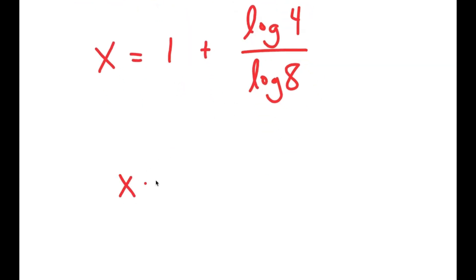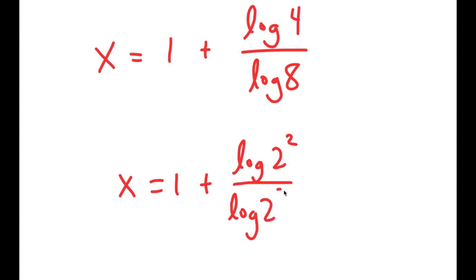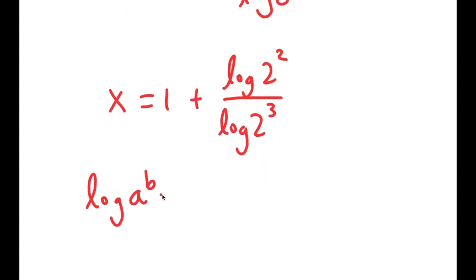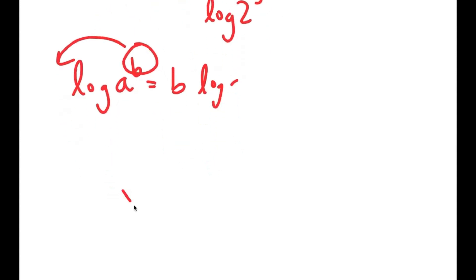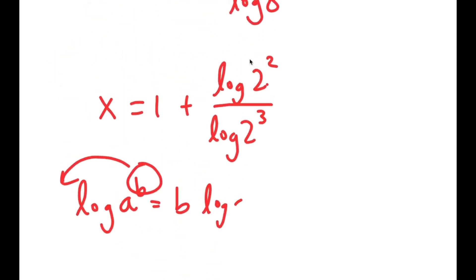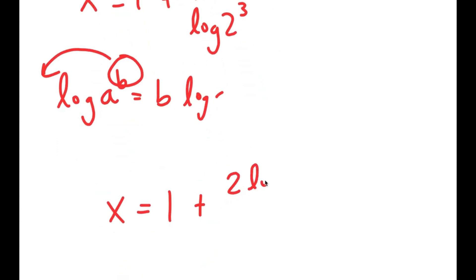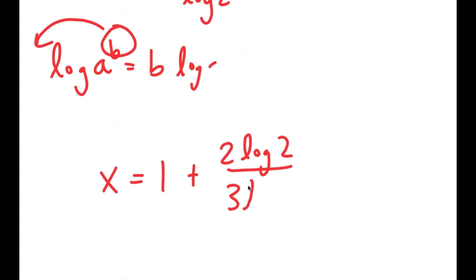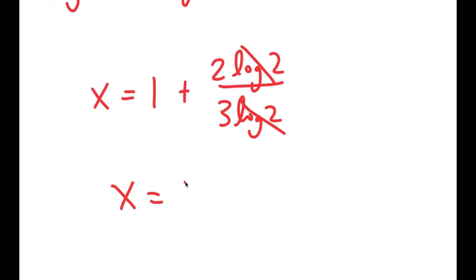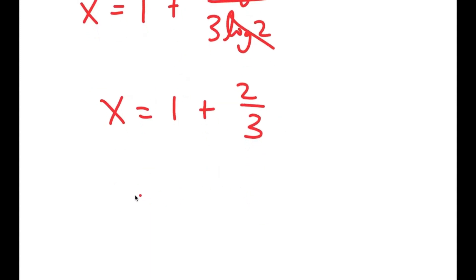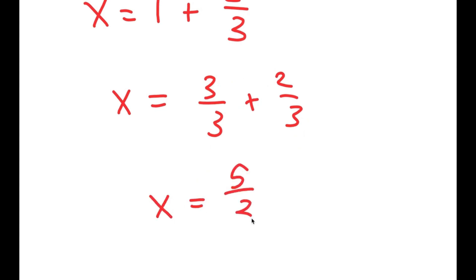Now log of 4 is the same thing as log of 2 squared, and log of 8 is the same thing as log of 2 to the power of 3. Using the power rule again to move the exponents to the front, I get x equals 1 plus 2 times log 2 over 3 times log 2. These log 2 terms cancel out, leaving x equals 1 plus 2 over 3. Since 1 equals 3 over 3, I get 3 over 3 plus 2 over 3, which equals 5 over 3. So x is 5 over 3.